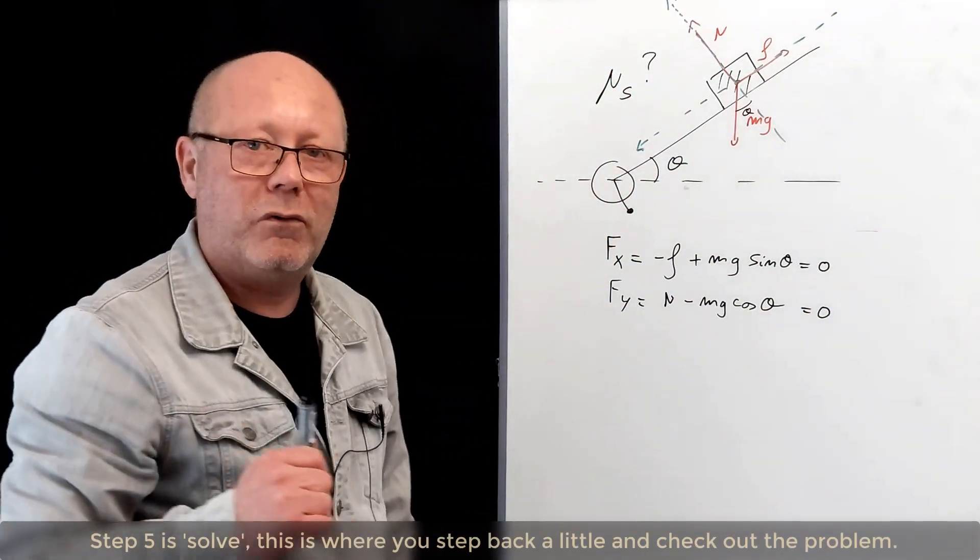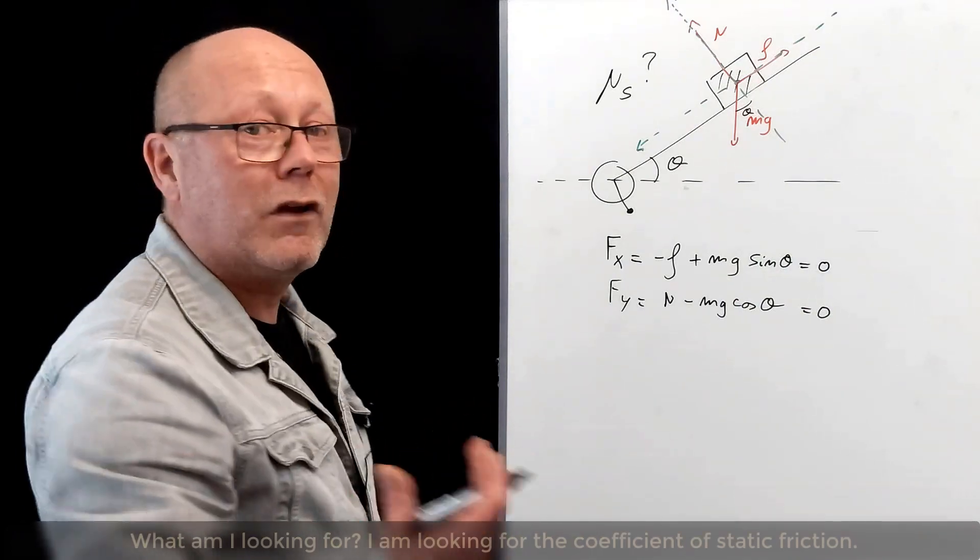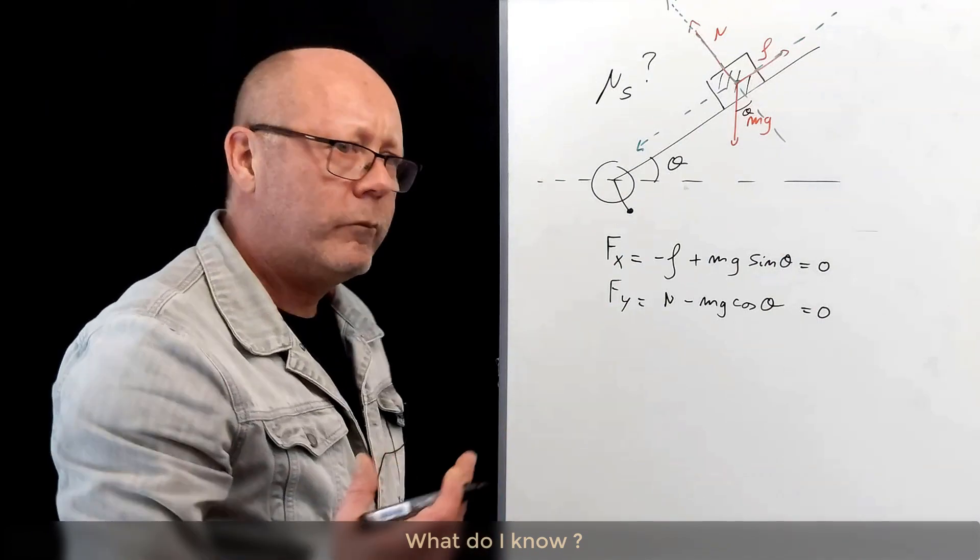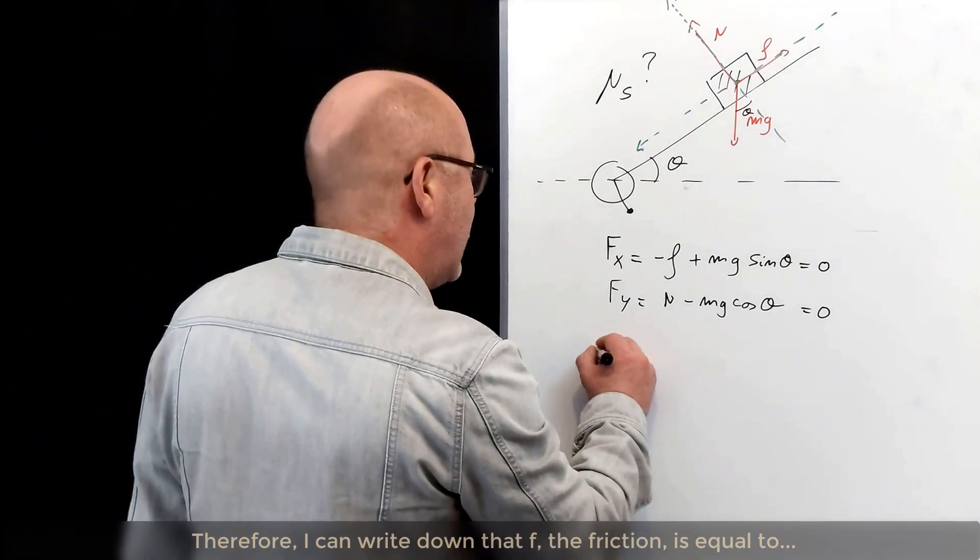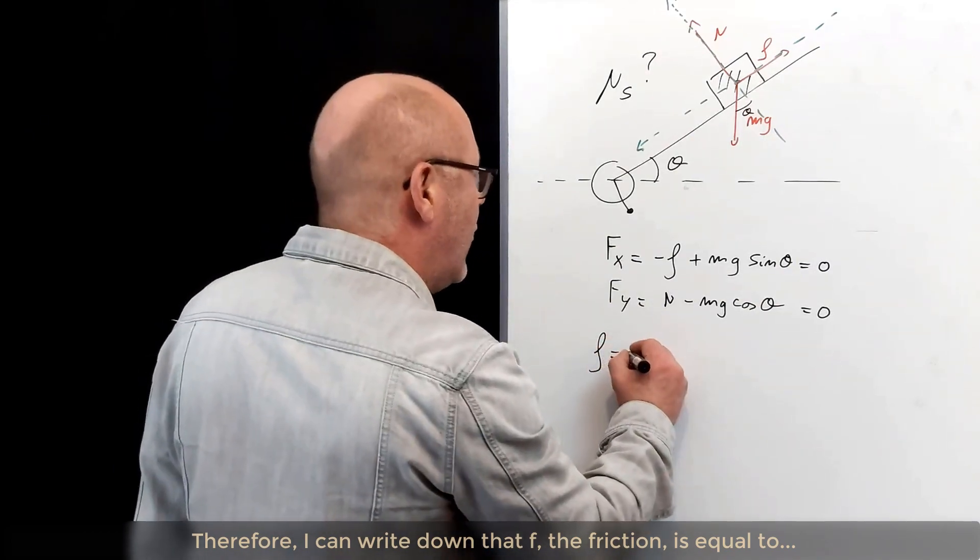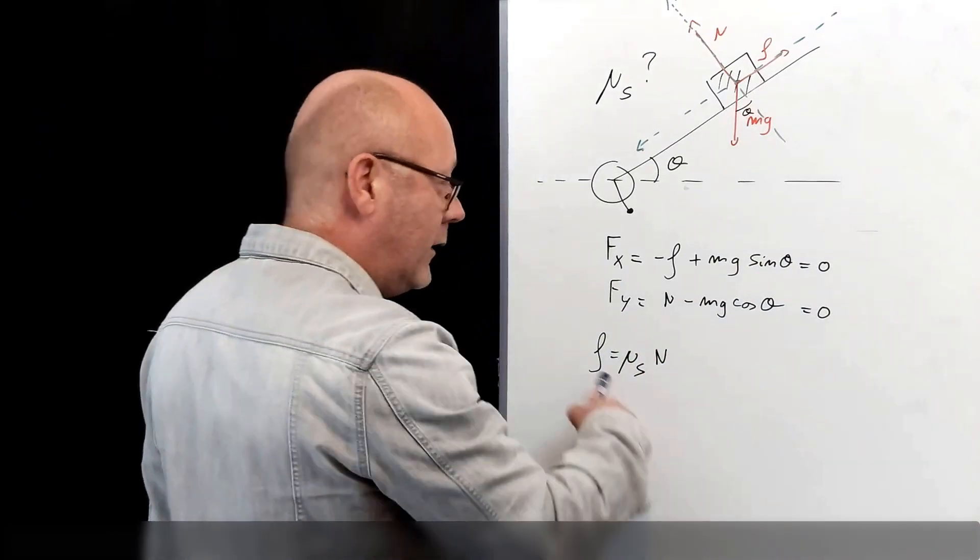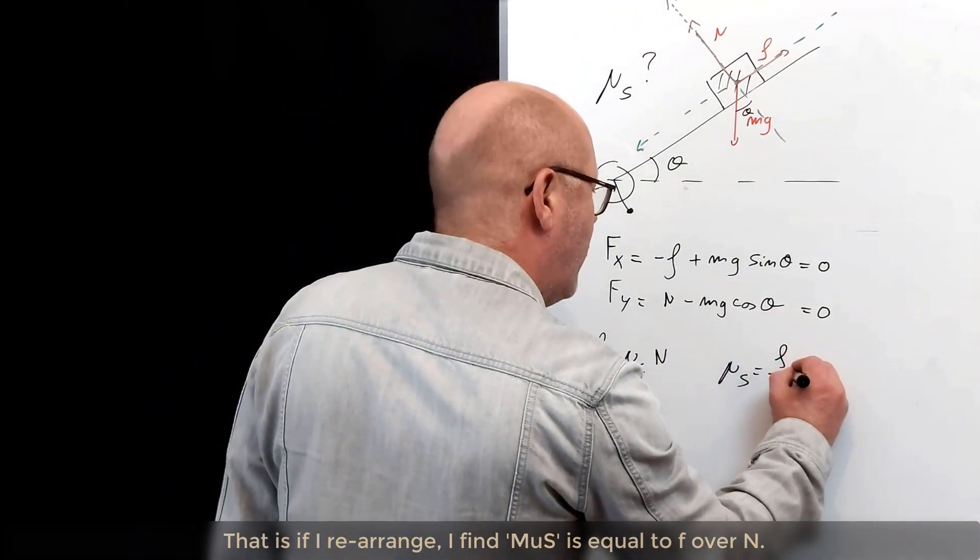Okay, step number five is solve. So that's why you step back a little, and you check out the problem, what you're looking for. I'm looking for the coefficient of static friction. What do I know? Is that I am at the point of slipping. Therefore, I can write down that f, the friction, is equal to the product of the coefficient of static friction by the normal force. That is, if I rearrange, I find mu s is f over N.